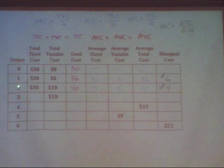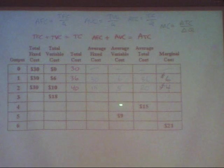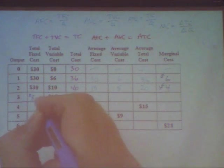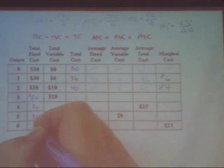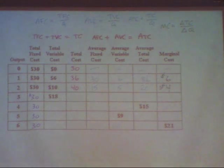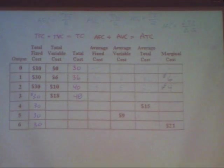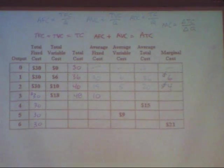Now on the third unit of output, we want to fill in the rest of the numbers in that row. The total fixed cost of making three is still 30 — fixed cost is the same no matter what the output level is. Total cost is fixed plus variable: 30 plus 18 is 48. Average fixed cost is 30 divided by 3, which is 10. Average variable cost is 18 divided by 3, which is 6.